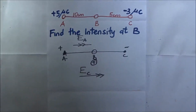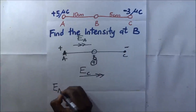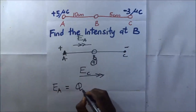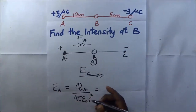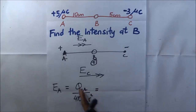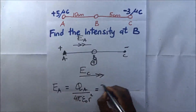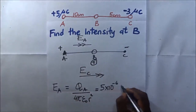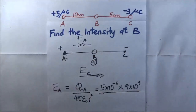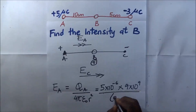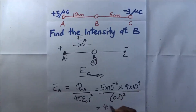The intensity due to A using the formula is E_A = q_A over 4πε₀r². q_A is 5 microcoulombs, so it is 5×10⁻⁶ times 9×10⁹, divided by r squared. The separation is 10 centimeters, converting to meters gives 0.1 m, so it is 0.1 squared. Our answer for E_A is 4.5×10⁶ newtons per coulomb.